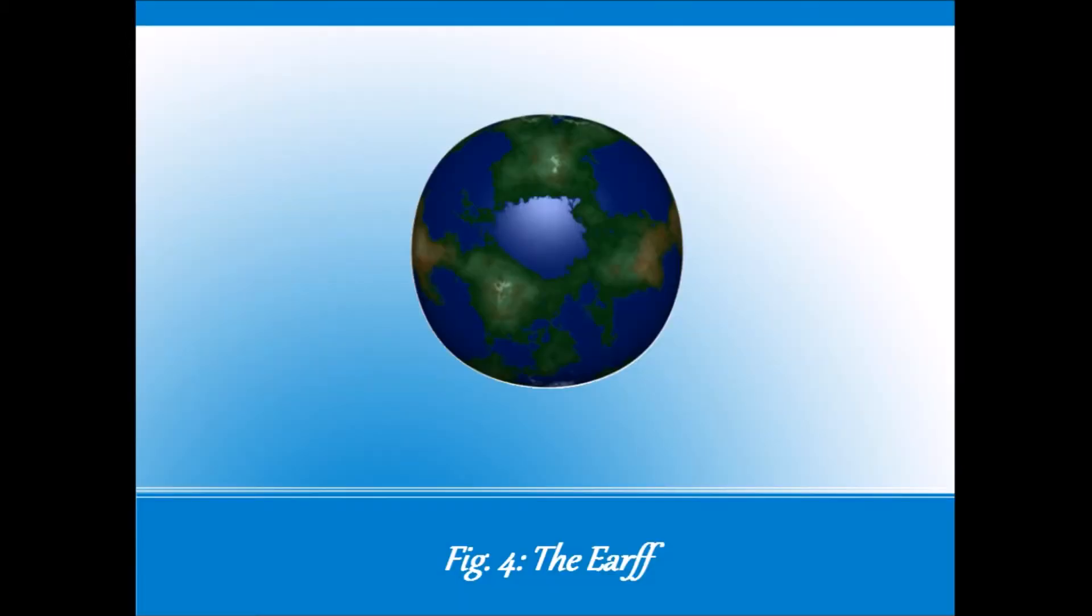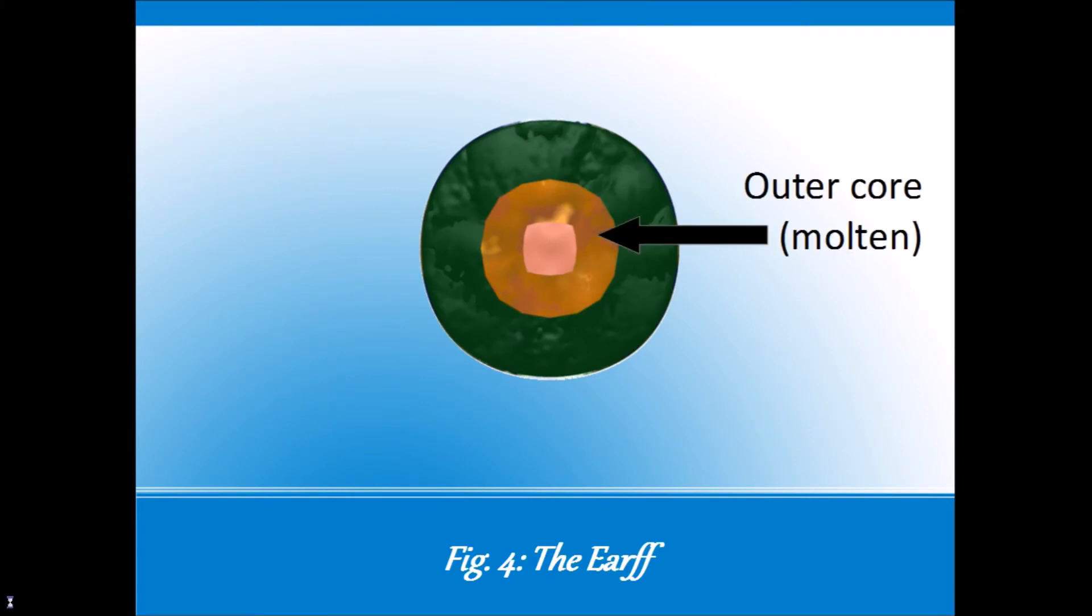In fact, our whole planet acts like a giant bar magnet. A planet like the earth has a molten outer core, a place where hot metallic liquid flows and generates magnetism.